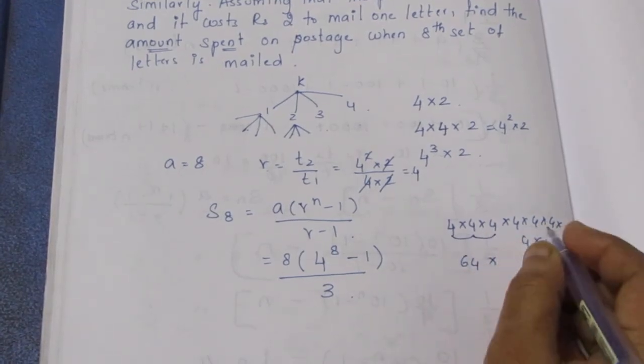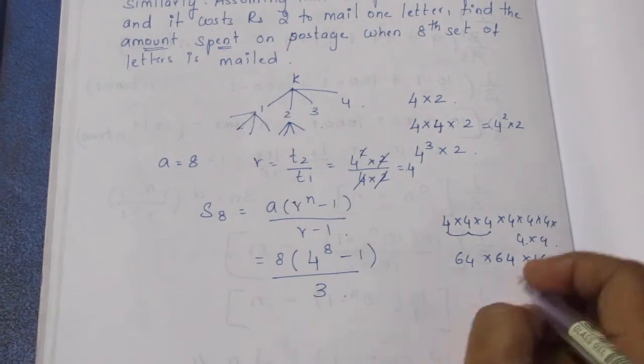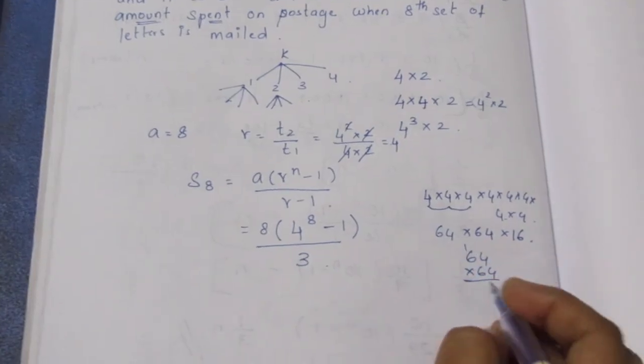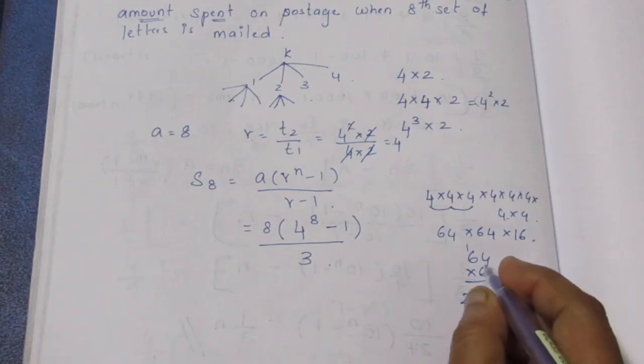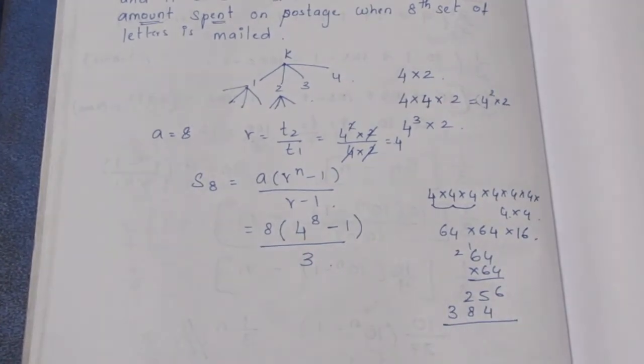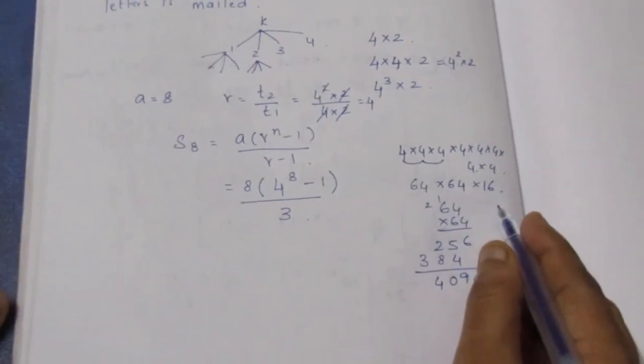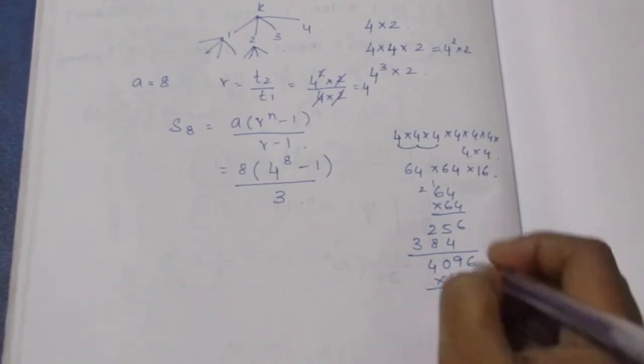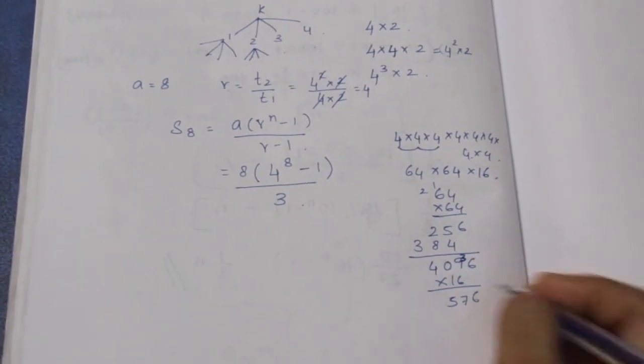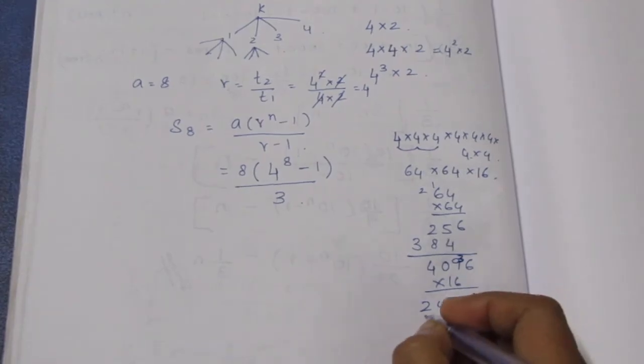This is 3. 64 into 4s are 16. So if we multiply 64 into 64, 4s are 16, 24 plus 1 is 25. 6 4s are 24, 6 6s are 36, 38. That's 6, 9, 10, 4. Now 64 into 64 into 16. 6 into 6 is 36. 6 9s are 54, 57, 75, 25, 75.